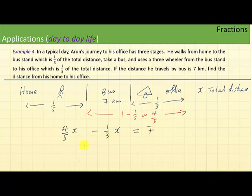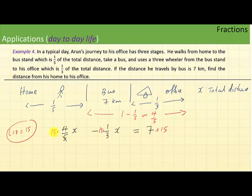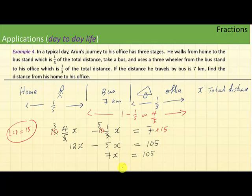To solve for x, the LCD of 5 and 3 is 15, so we multiply each term by 15. Fifteen divided by 5 gives 3, so the first term becomes 12x. Fifteen divided by 3 gives 5, so the second term becomes 5x. Thus 12x minus 5x equals 7 times 15, which gives 7x equals 105. Dividing both sides by 7, x equals 15. The total distance from his home to his office is 15 kilometers.